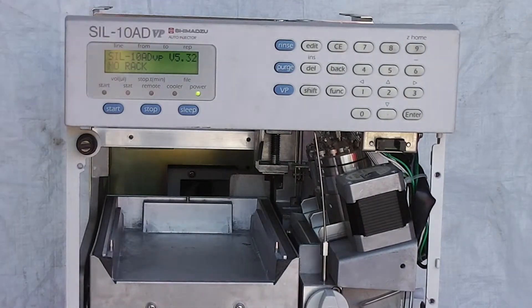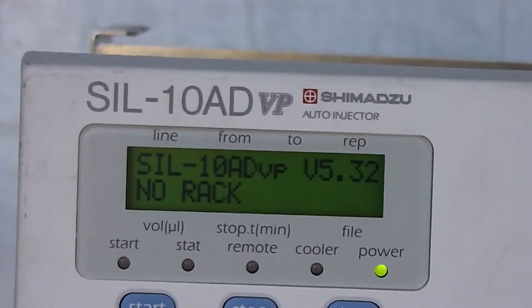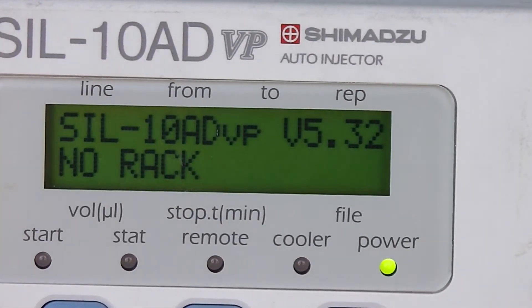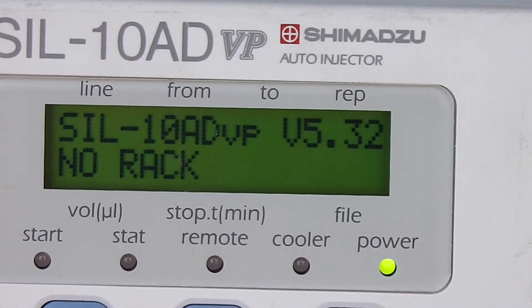Now we get a different message here, a no rack message, and I'll put that in the auction sold non-working for parts or repair.